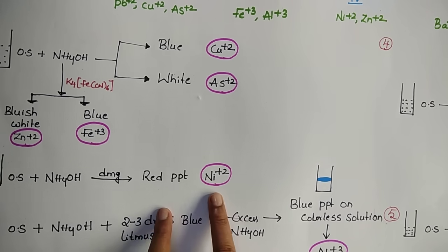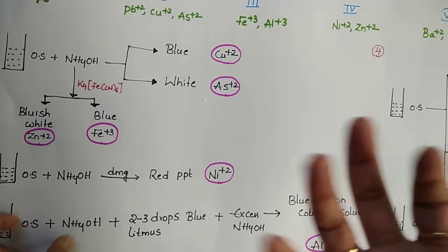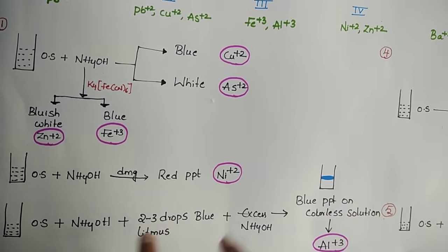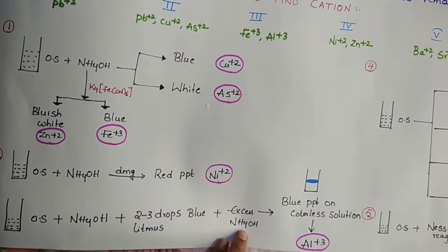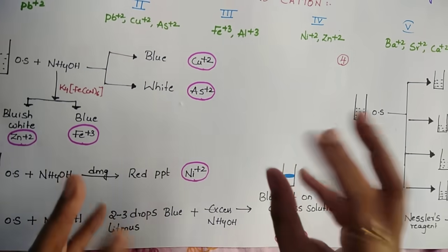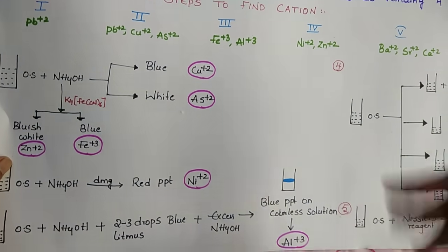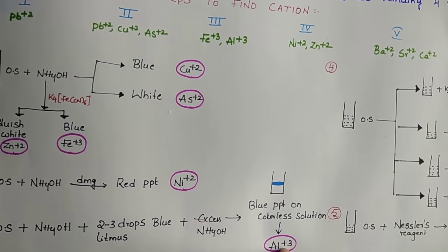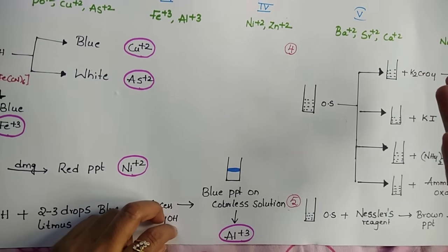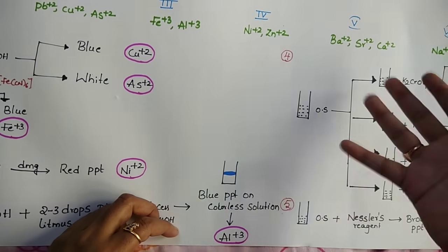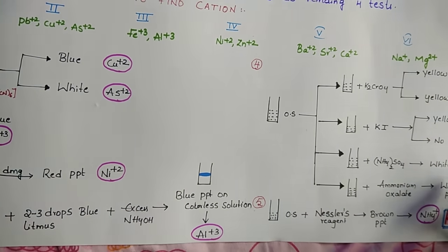If there is no red precipitate for Ni²⁺, take one more test tube with your already prepared original solution and NH₄OH, add two to three drops of blue litmus solution, then add excess NH₄OH. If you observe a blue-colored layer formed above a colorless solution, it confirms that Al³⁺ ions are present. This simple test makes identification very easy. Note down all the points and practice in your lab before your final exam — do all these tests and you can finish salt analysis within 10 to 15 minutes.